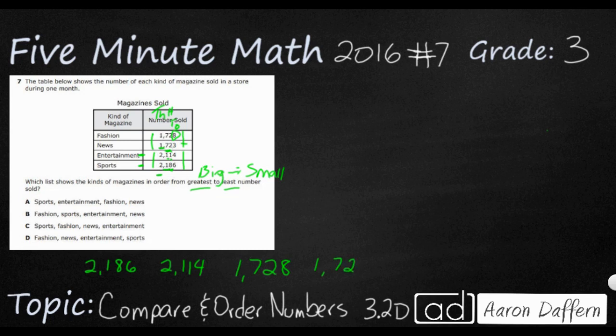One way they make this problem tricky is they don't give you the answer as numbers. They give you the names. So we need to put the names. I'll use the first two letters. Sports, then entertainment, then fashion at 1,728, and news.